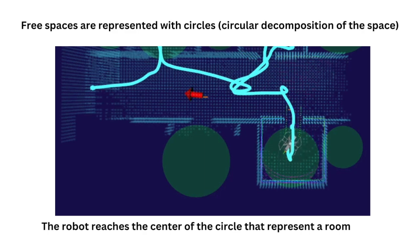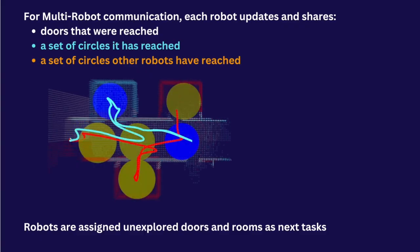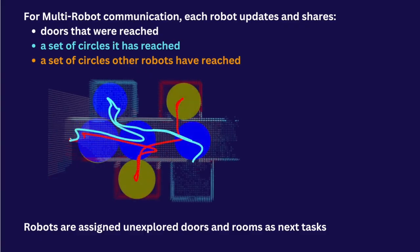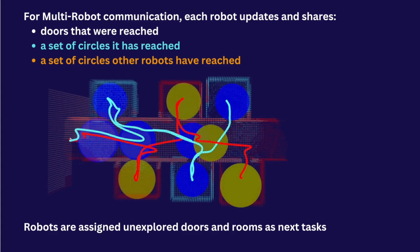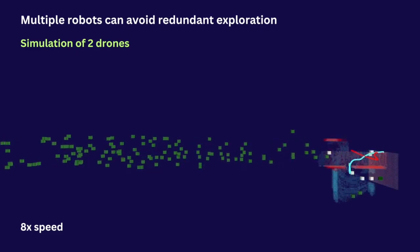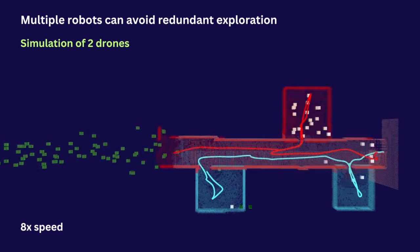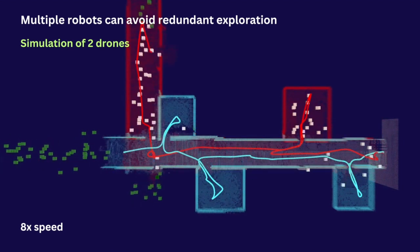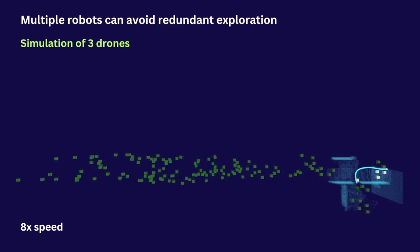For multi-robot exploration, each robot communicates with other robots sharing the following information: a set of doors it reached, a set of doors reached by other robots, a set of circles it reached, and a set of circles reached by other robots. When selecting the next target, it avoids the doors and circles explored by itself and other robots. Doing so, the robots can avoid redundant exploration of multiple rooms in a building.